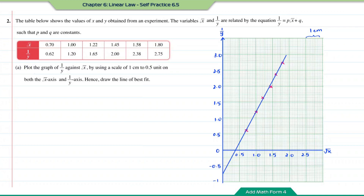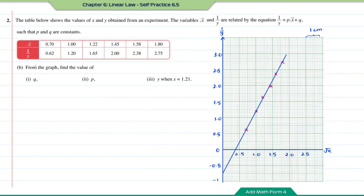After the adjustment, this is what the graph of 1 over y against square root of x looks like. For Question B, from the graph find the value of q. Based on the equation 1 over y equals p times square root x plus q, comparing with y equals mx plus c, q is equal to c. Therefore q is the value of the y-intercept. Based on the graph, the value of the y-intercept is negative 0.75.